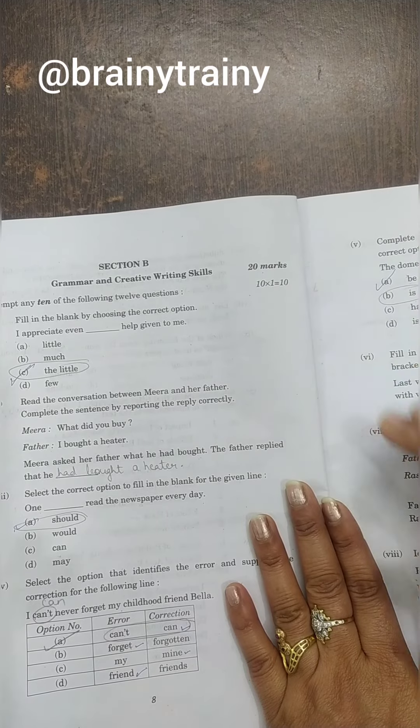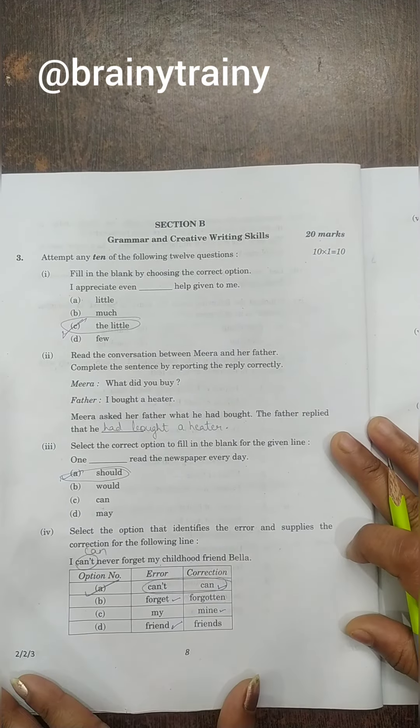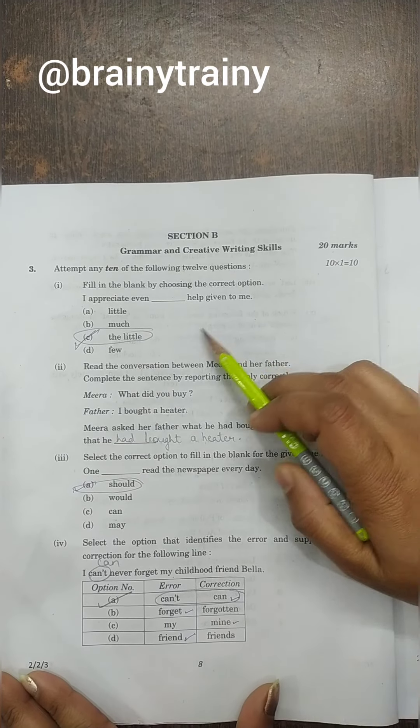So let's go to Section B where there is grammar 10 marks and then creative writing. I will tell you about the answers in grammar. So let's see with you if you have this set, you can see if you have the answers right or not.